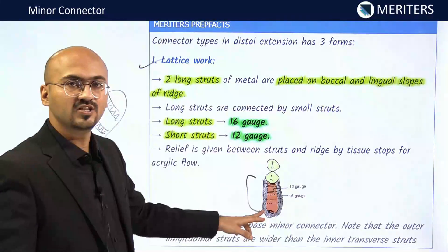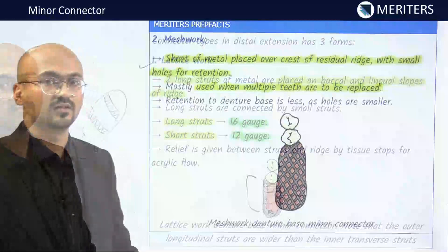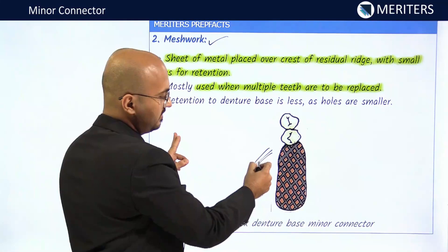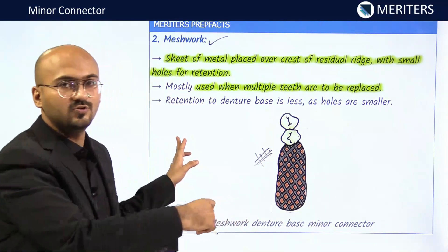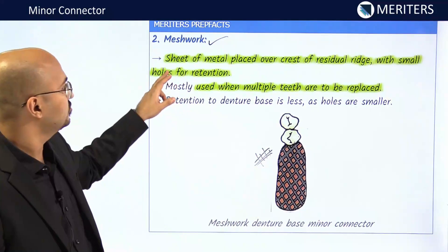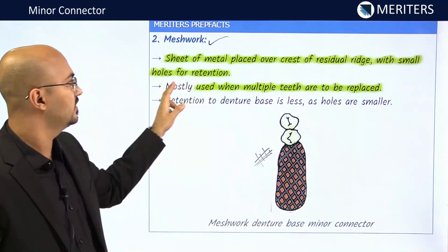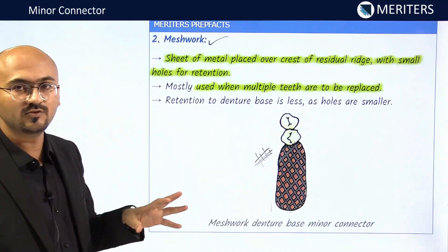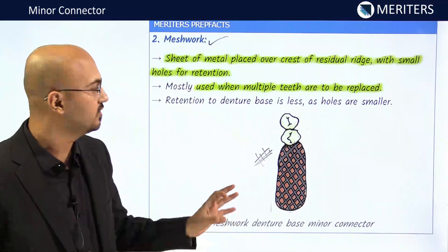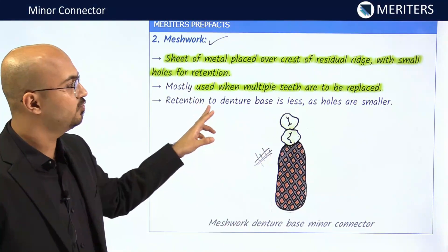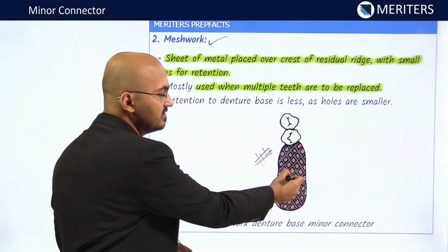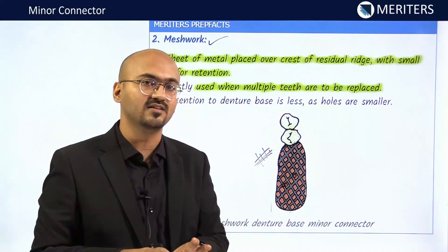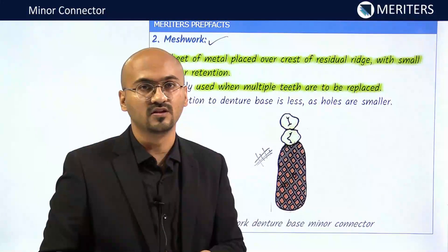The tissue stops are prepared on the posterior-most extension of the minor connector. The next type is mesh work — an overlap of longitudinal metal elements forming a sheet placed over the crest of the residual ridge, resulting in small holes for retention. Mesh is mostly used when there are multiple teeth to be replaced. However, retention to the denture base is less compared to lattice because the holes are small.